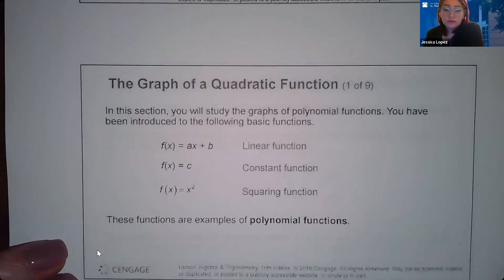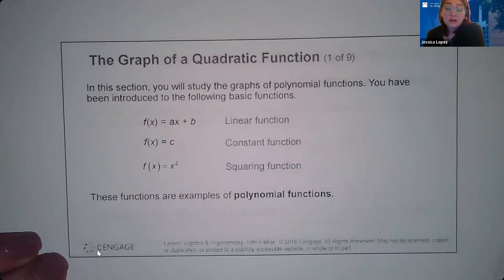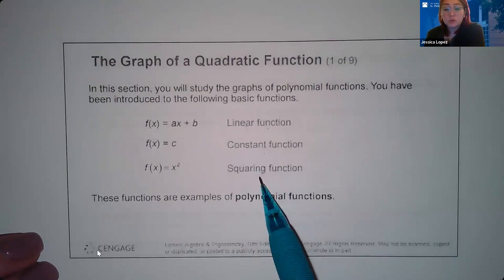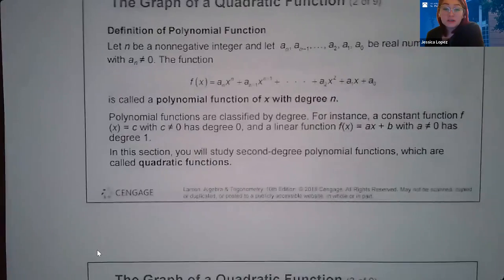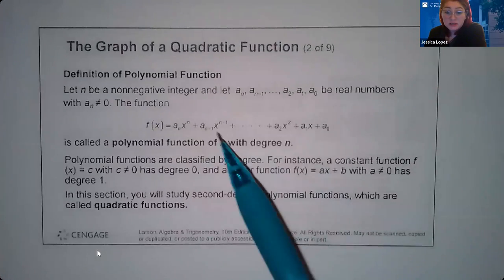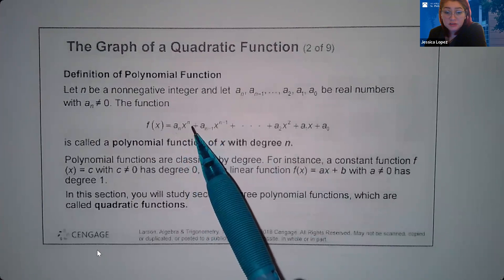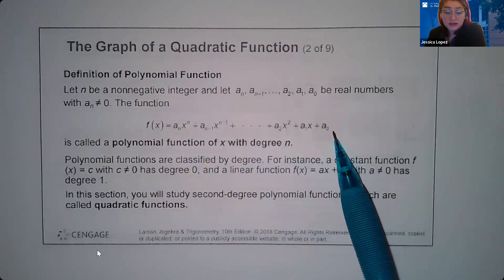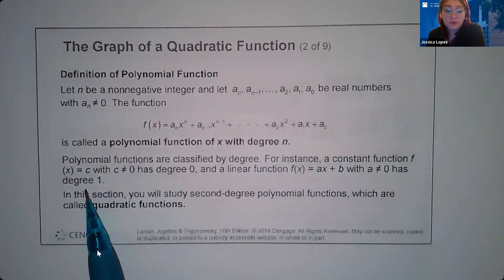The graph of a quadratic function starts here. In this section you will study the graphs of polynomial functions. You have been introduced to basic functions like linear functions, constant functions, and even the squaring function. These functions are examples of polynomial functions. The definition of a polynomial function is one where you can have any greatest exponent with its coefficient, and then the exponents decrease in power down to the squared, first, and zero power.